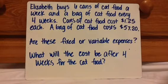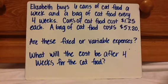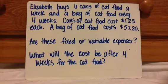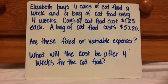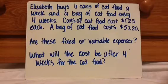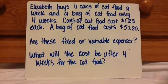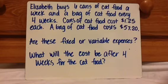Let's look at another example. Elizabeth buys six cans of cat food a week and a bag of cat food every four weeks. Cans of cat food cost $1.25 each. A bag of cat food costs $57.20. Are these fixed or variable expenses? What will the cost be after four weeks for the cat food?